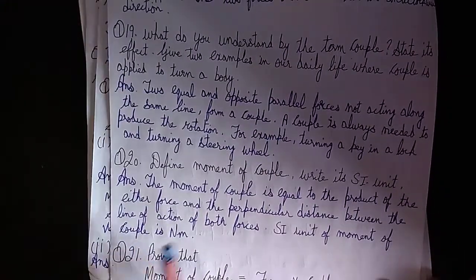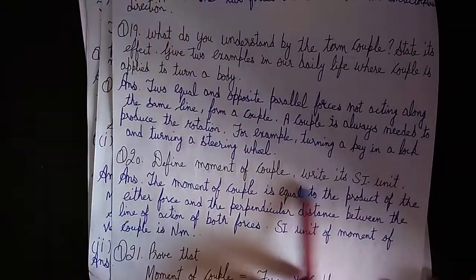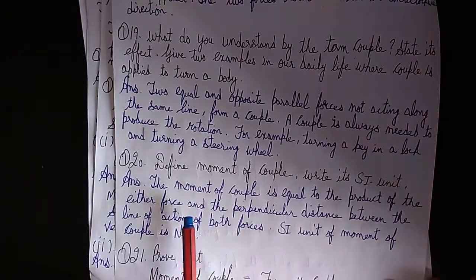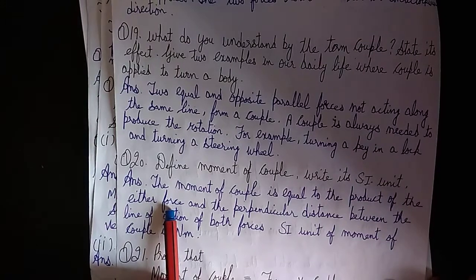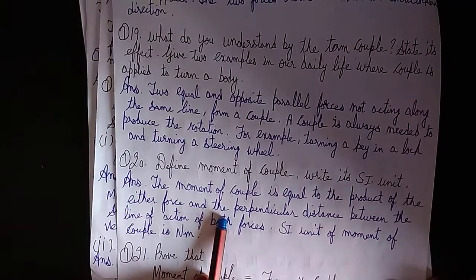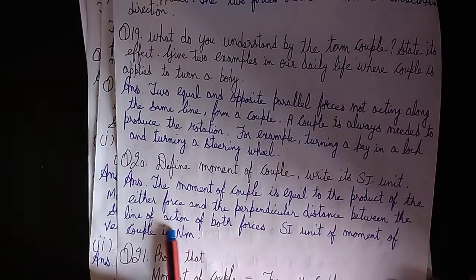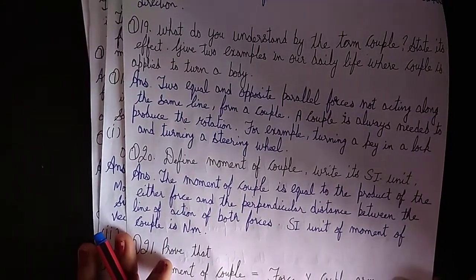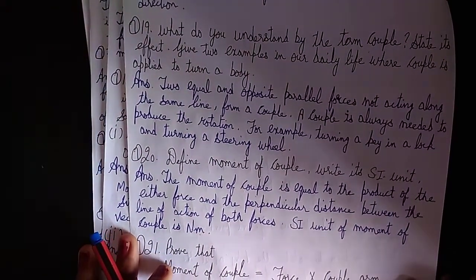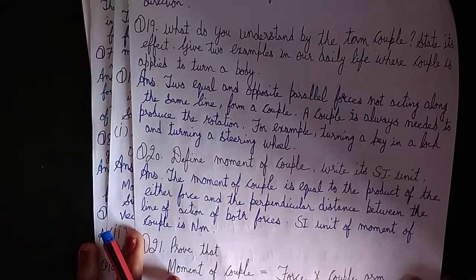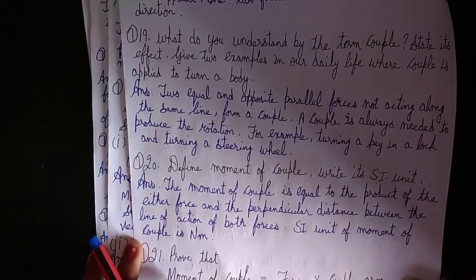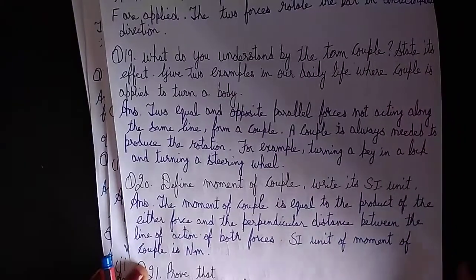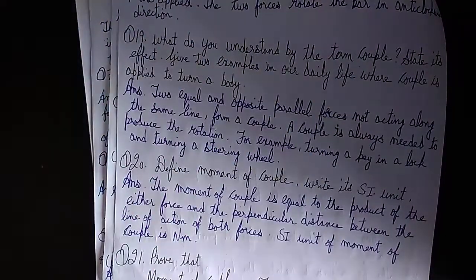Define moment of couple and write its unit. The moment of couple is equal to the product of either force and the perpendicular distance between the lines of action of both forces. The unit of moment of couple is Newton meter.